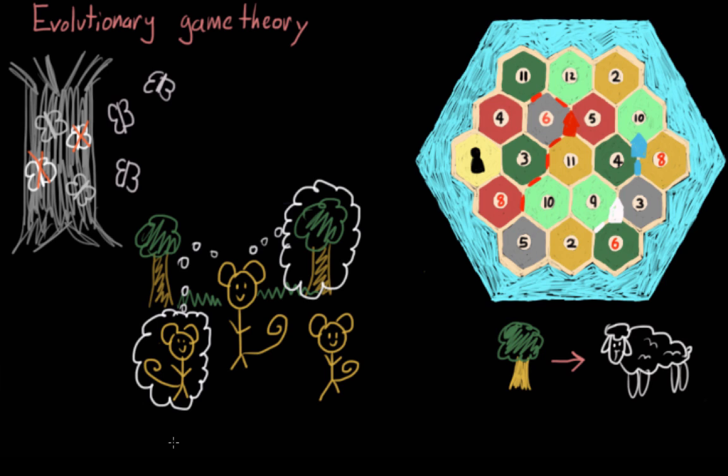And this is exactly how evolutionary game theory fits in with general game theory. Because the strategy of each individual will depend, at least in part, on the strategies exhibited by the other players.